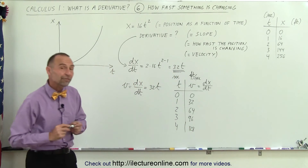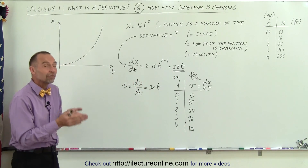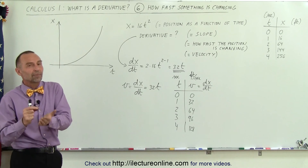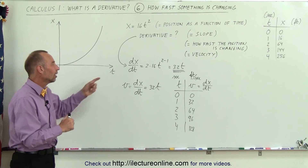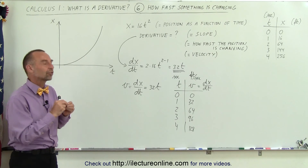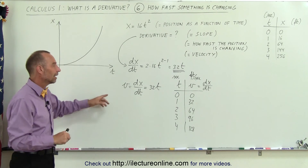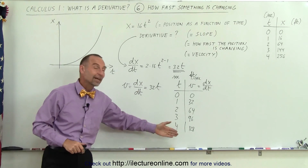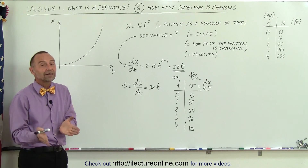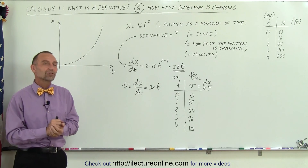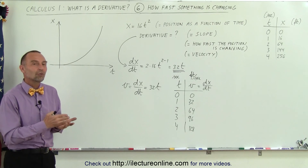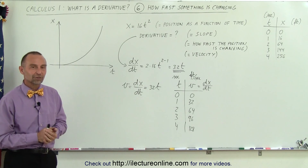The derivative in this case simply represents the velocity of the object. Since the original function represents position as a function of time, the derivative represents velocity as a function of time. We can find out how fast the object is moving simply by finding the derivative of the original function. And there you see another application of why we use the derivative of functions.